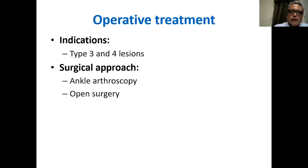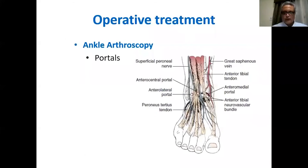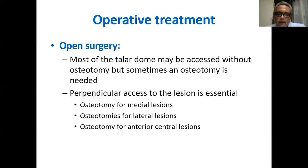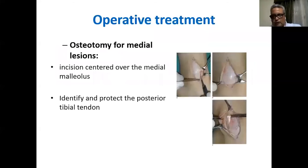Indications for operative treatment are usually advanced cases like Type 3 and Type 4 lesions, accessed either by ankle arthroscopy or open surgery. For ankle arthroscopy, the patient can be positioned with the knee bent and some distraction, or lying supine with the foot off the table using manual distraction. The most commonly used portals are the anteromedial and anterolateral portals. For open surgery, most talar dome lesions can be accessed by anteromedial, anterolateral, or anterior approaches, but some medial lesions are hidden under the medial malleolus, requiring osteotomy of the medial malleolus, lateral malleolus, or anterior tibia.